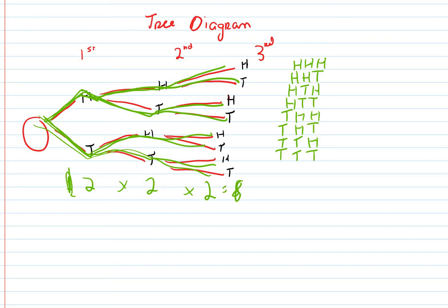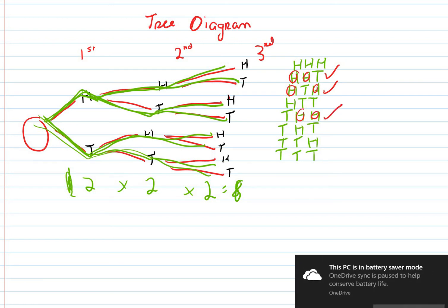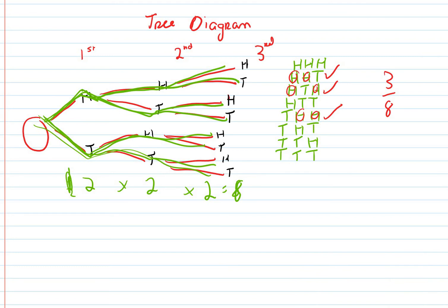This is helpful because we might ask: what's the chances of getting exactly two heads? We look at the list and find head-head-tails, head-tails-head, and tails-head-head — that's three outcomes with exactly two heads. So the probability is 3 out of 8. The tree diagram is useful that way.